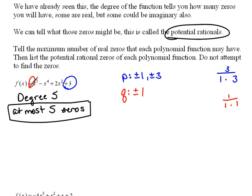So P is the factors of the constant term. Q is the factors of the leading coefficient. Now our potential rationals, this would be the place that they would start looking for zeros.